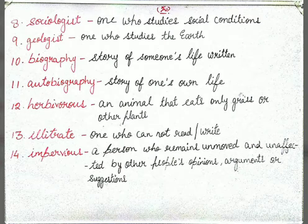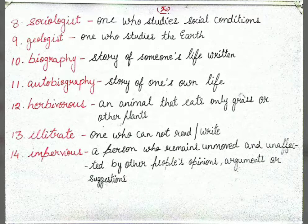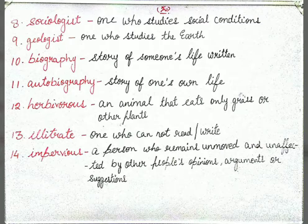Next is 'geologist' — the person who studies the earth. Earth ke baare mein jo padhe use geologist kehte hain. Next is 'biography' — the story of someone's life written by another. And 'autobiography' is the story of one's own life written by oneself. Next is 'herbivores' — an animal that eats only grass and other plants.